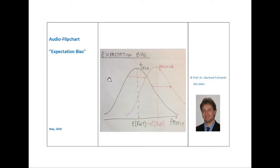On the vertical axis, we see the so-called probability density. The probability density function is a function that enables us to calculate the probability that the profit is within a certain range.